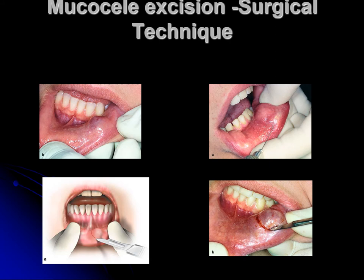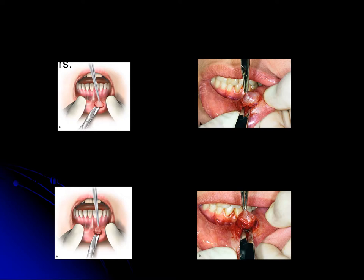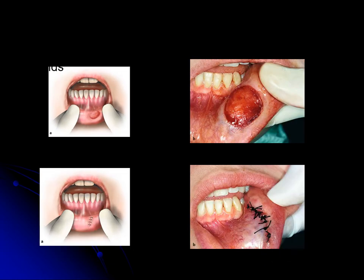For surgical excision of a mucocele, incisions are placed around the mucocele and it is removed completely. Care must be taken not to leave any remnants, as this increases the chance of recurrence. Complete removal of the mucocele is essential.